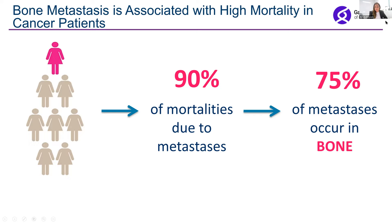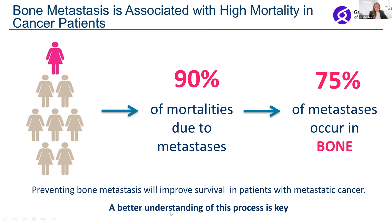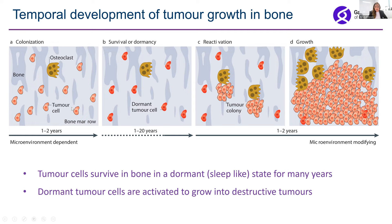What's less well appreciated is that 75% of metastases in the case of breast cancer and other cancers such as prostate cancer actually occur in the bone, in the skeleton. These tumor cells arrive in the bone environment via the blood vessels — they break away from the primary site, travel through the bloodstream, and arrive in the bone environment.